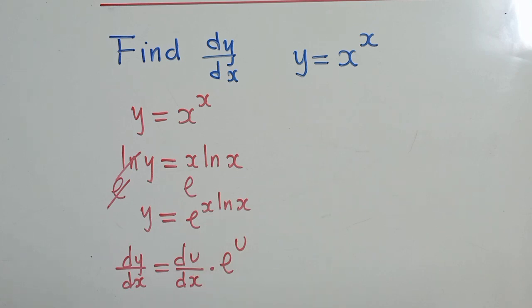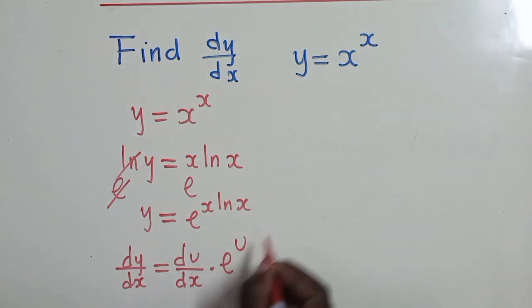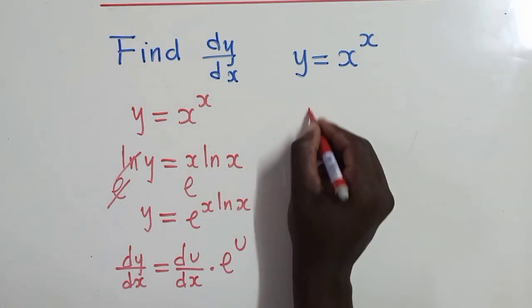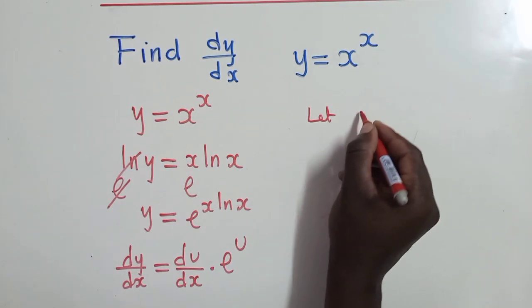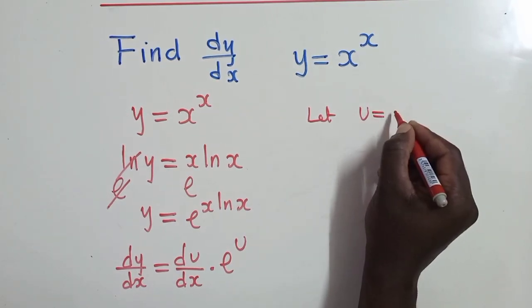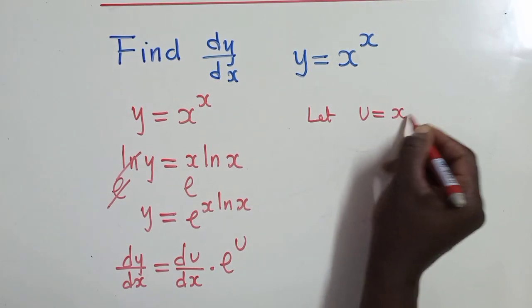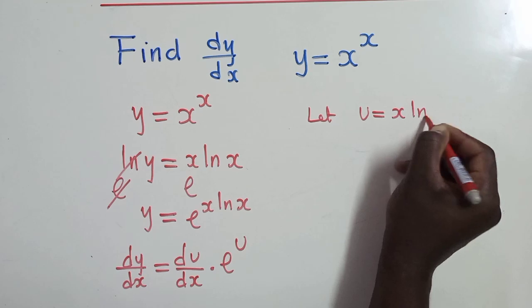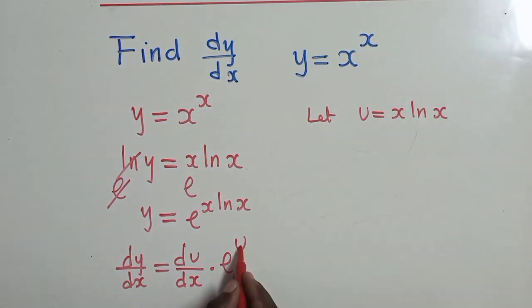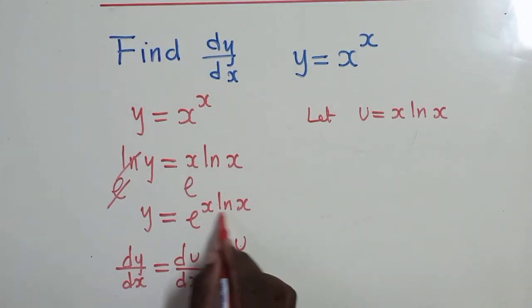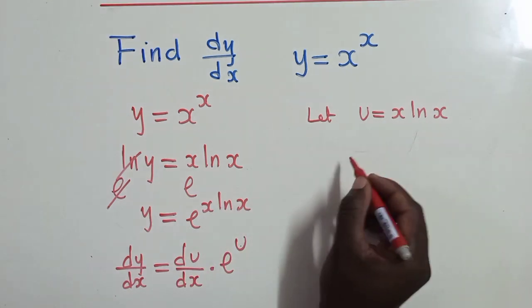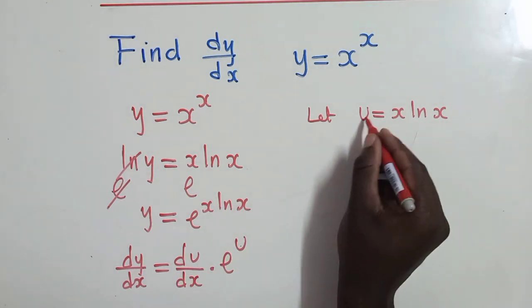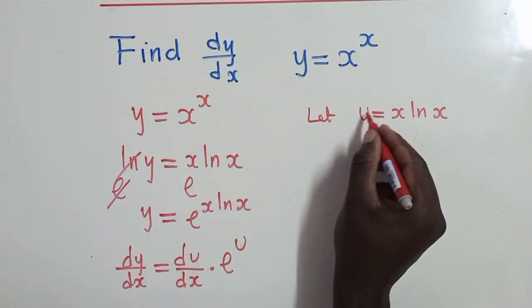Using that formula, we let u be equal to x·ln(x). This is our u, so we just place it into the formula. Now we need to find the derivative of u.